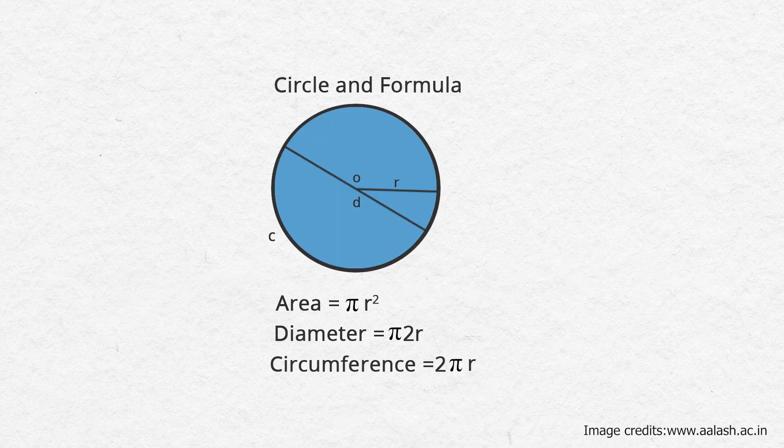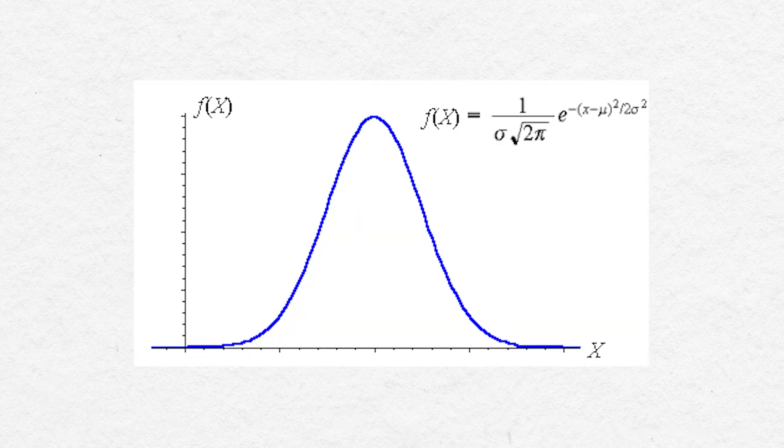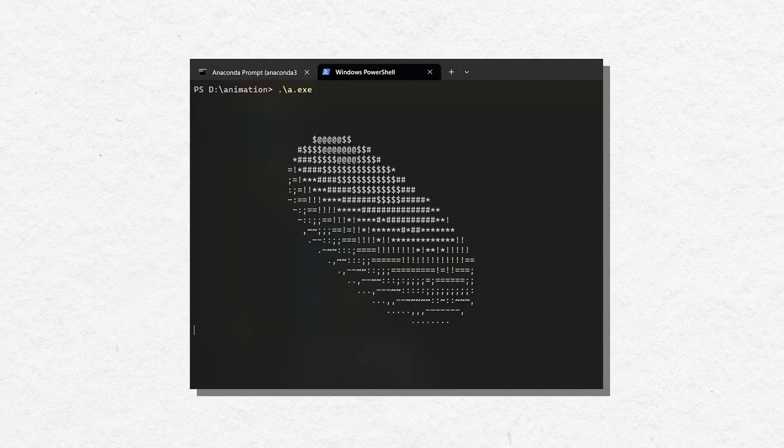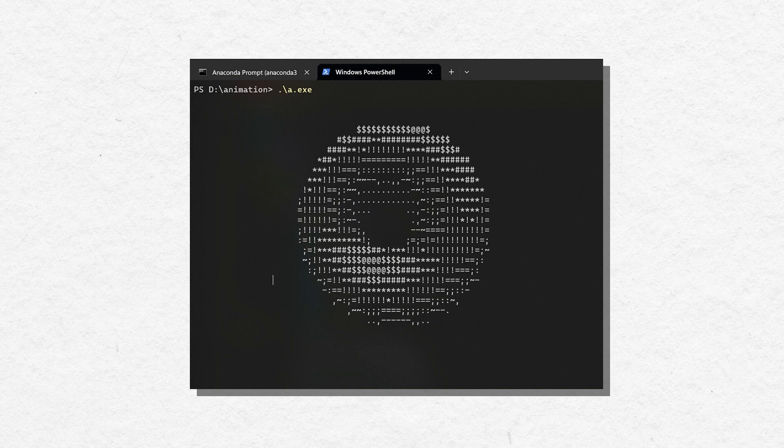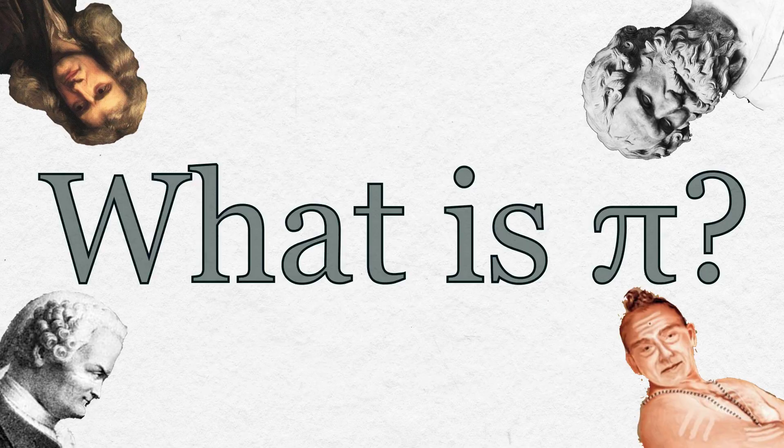So the next time you are calculating a circumference, or using it for normal distribution, or making that sweet rotating donut in C++, remember how far we have come with pi and its irrationality.